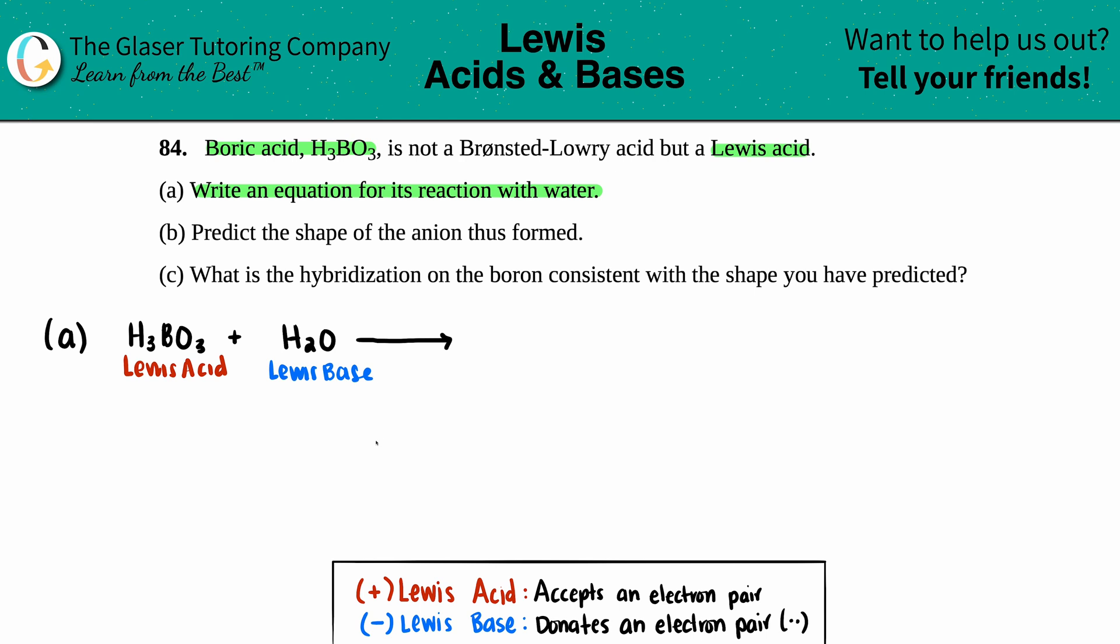The general definitions for Lewis acid and Lewis base: it's not about proton transfer like Bronsted-Lowry, but it's all about electron transfer. It always starts with the base. The base kicks off the reaction because it has the lone pair of electrons that they will donate to the acid.